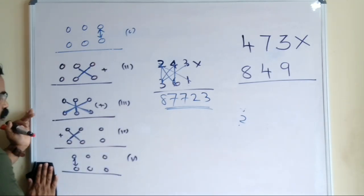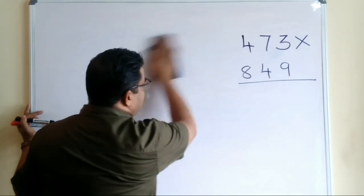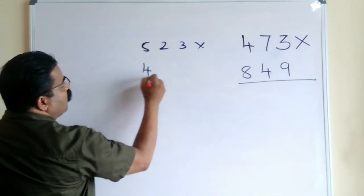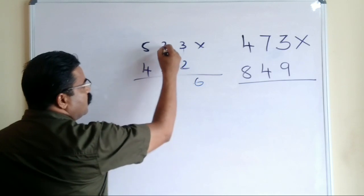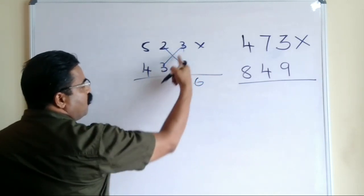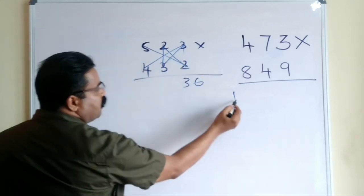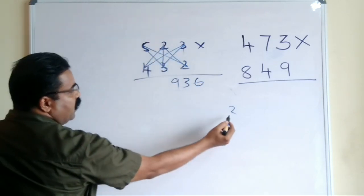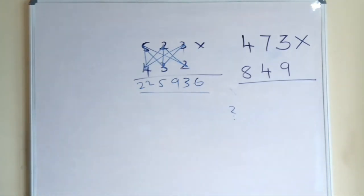I hope you understood the steps. If not, pause the video and note them down. I am now removing the steps — from here on the steps should only be in your mind. One more example: 523 multiplied by 432. Calculating: 6, then 13 carry 1, then 28+1=29 carry 2, then 25+2=27 carry 2, then 22+2=24 carry 2, then 22. Answer: 225,936.